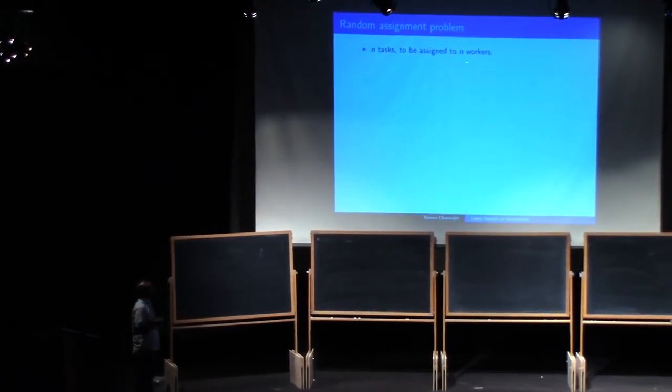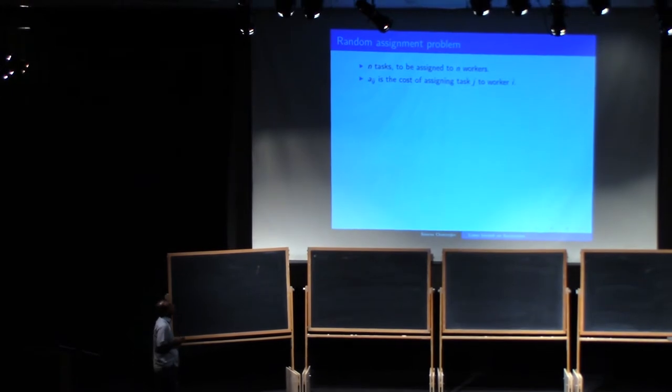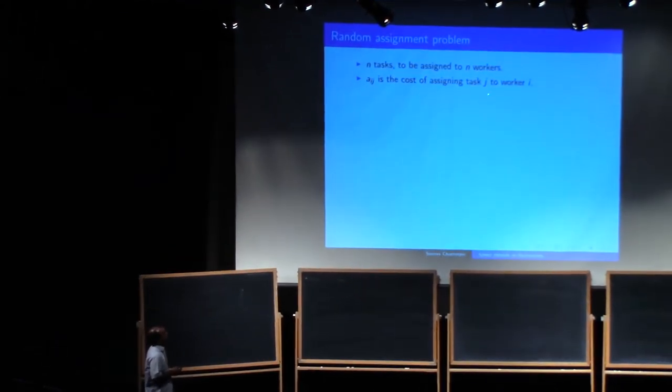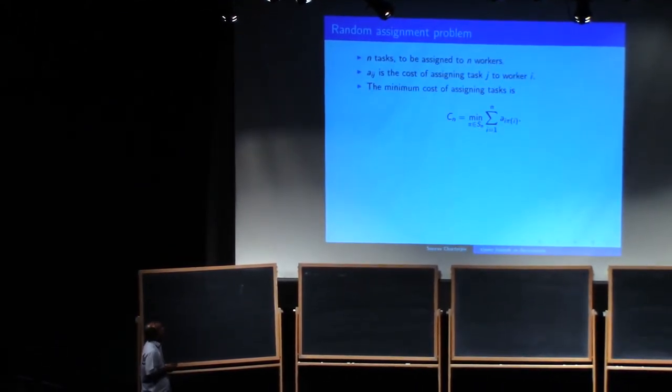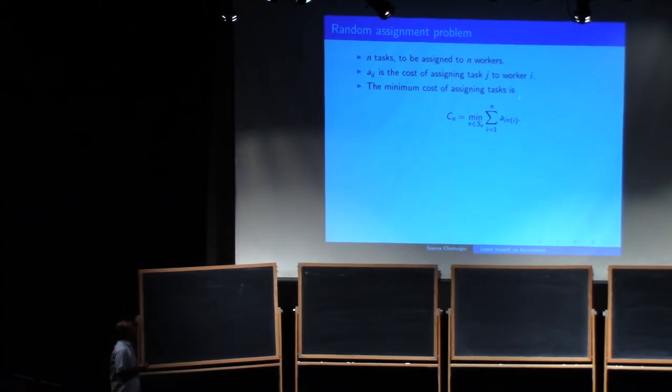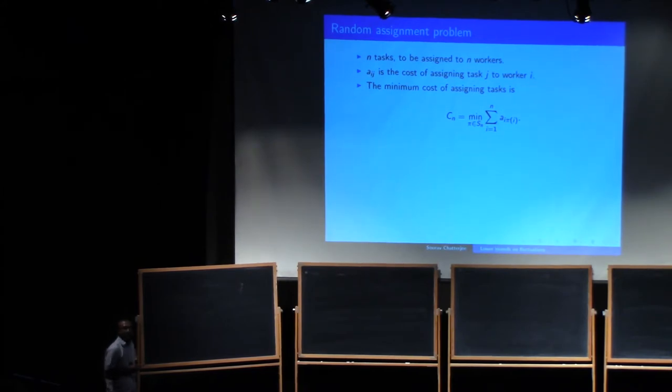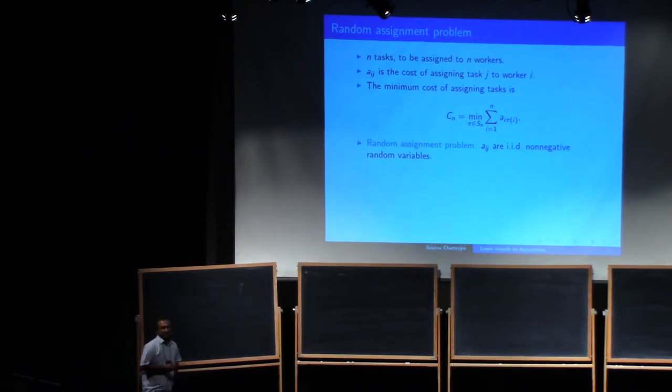The random assignment problem. So there are n tasks to be assigned to n workers, and aij is the cost of assigning task j to worker i. And then the minimum cost of assigning these tasks is, you know, any permutation pi is an assignment, and then you minimize the total cost of all permutations. That's the minimum assignment that you can have. And when these aijs are i.i.d. non-negative random variables, this is called a random assignment problem.